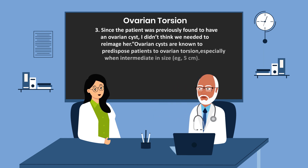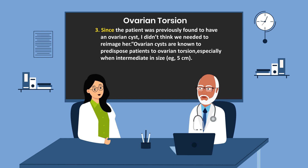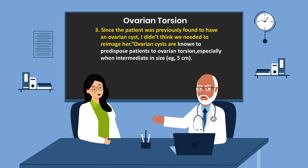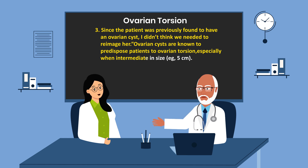Here is another pitfall. Since the patient was previously found to have an ovarian cyst, I did not think we needed to re-image. Ovarian cysts are known to predispose patients to ovarian torsion, especially when intermediate size is 5 cm or greater.